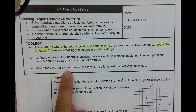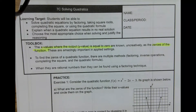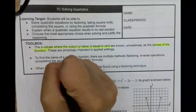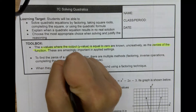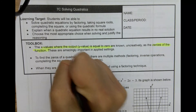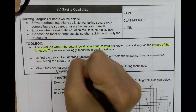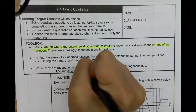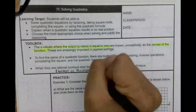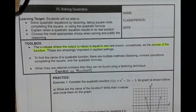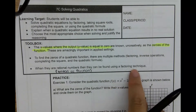meaning they can be written as fractions — rational numbers can be written as fractions. Rational has the word ratio in it, and one of the ways we write ratios is fractions. So when our answer, our solution, is a rational number, they can be found using factoring.